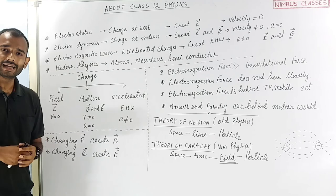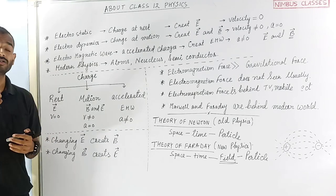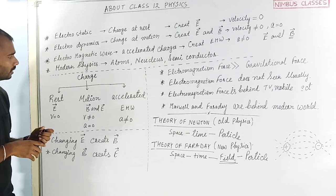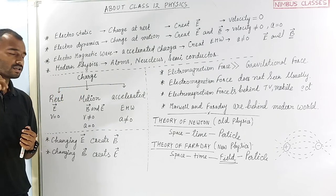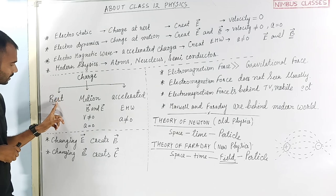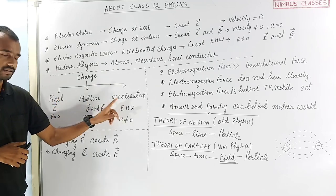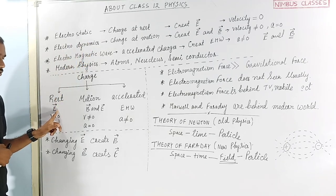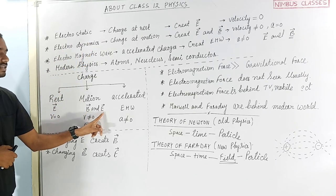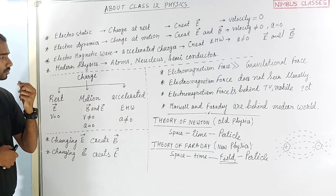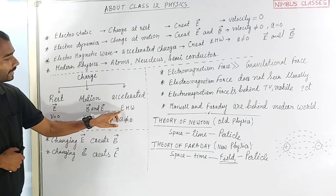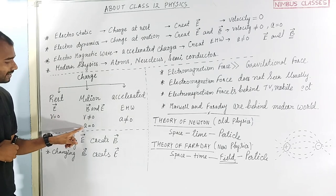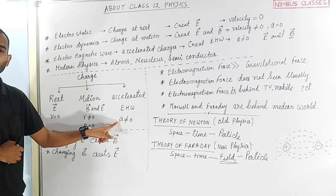So I mainly study about charge. When a charge is at rest, it produces an electric field. When charge is in motion, it produces both an electric field and a magnetic field. When charge is accelerated, it produces an electromagnetic wave. So: velocity equals zero — electric field; velocity not equal to zero but acceleration is zero — electric and magnetic field; acceleration not equal to zero — electromagnetic wave.